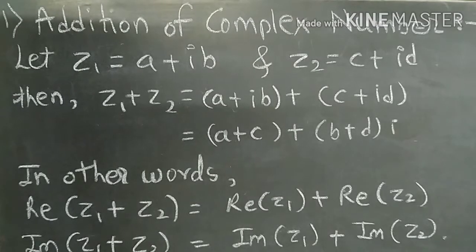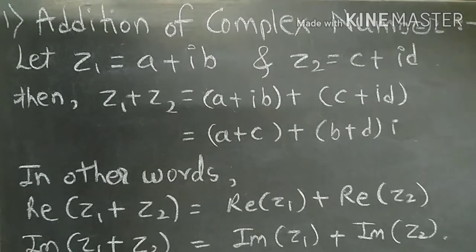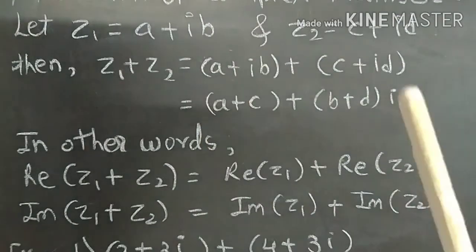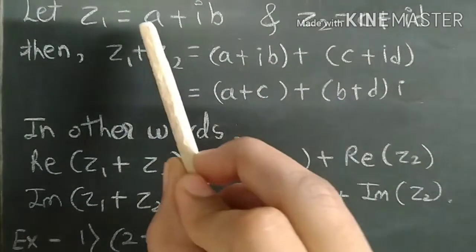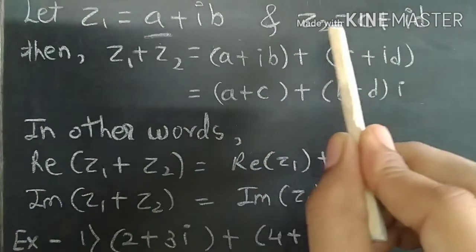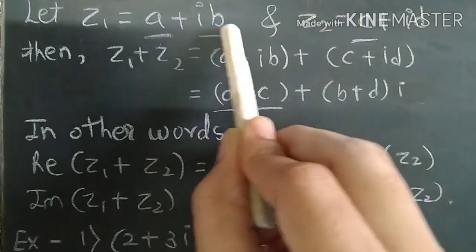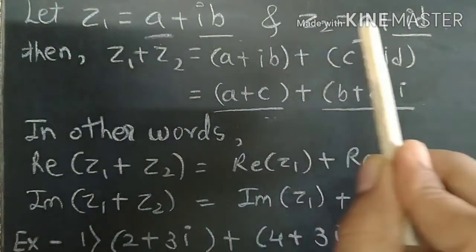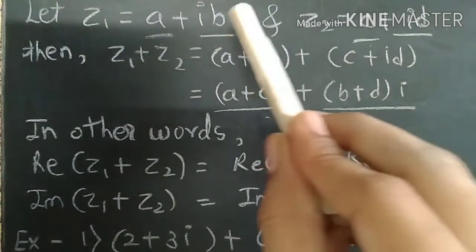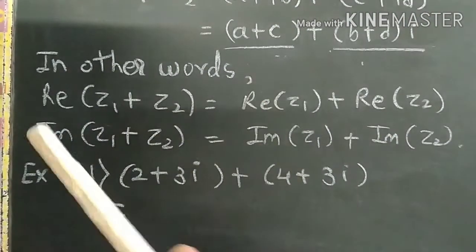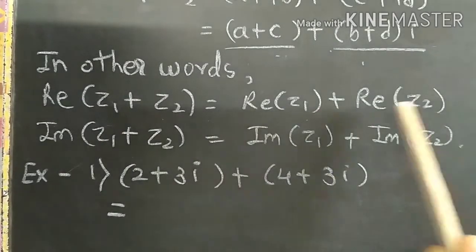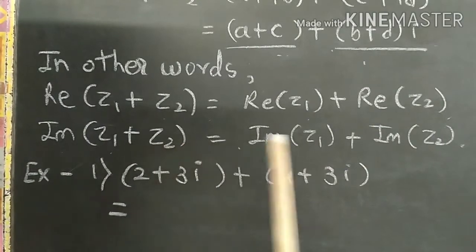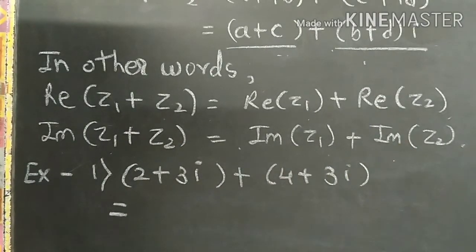Now we study addition of complex numbers. Let Z1 equal to A plus IB and Z2 equal to C plus ID. Then Z1 plus Z2 gives us the real parts addition and the imaginary parts addition: A plus C for the real part, plus I times B plus D. In other words, real part of Z1 plus Z2 equals real part of Z1 plus real part of Z2, and imaginary part of Z1 plus Z2 equals imaginary part of Z1 plus imaginary part of Z2.